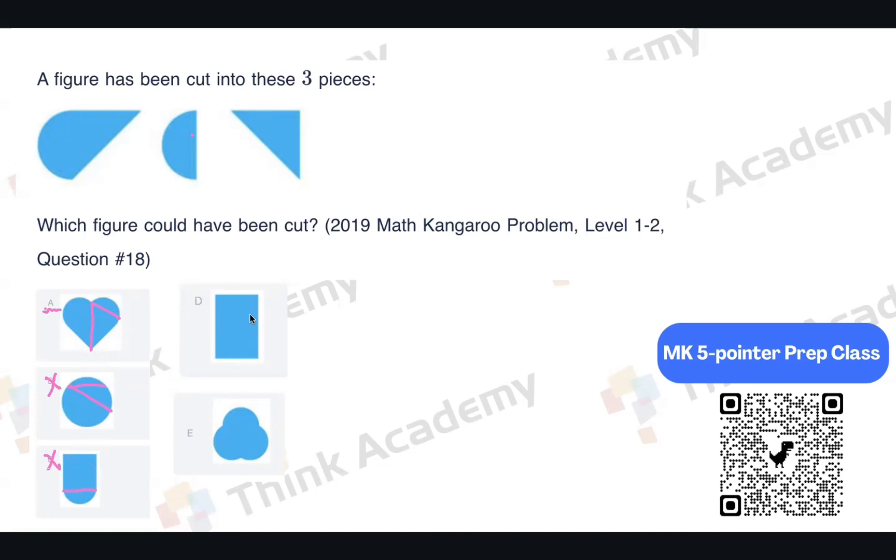How about D? It is a rectangle. Is it possible for us to cut a semicircle and with nothing left beside it? No way, right? So D is not correct. How about E? Of course, we can cut a semicircle and we can also cut a water drop. But how about the part left? Is it a triangle? No way, right? So E is not possible. So what is the correct answer? A, right?